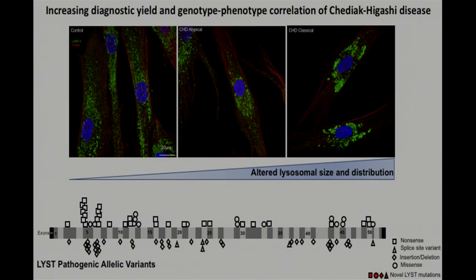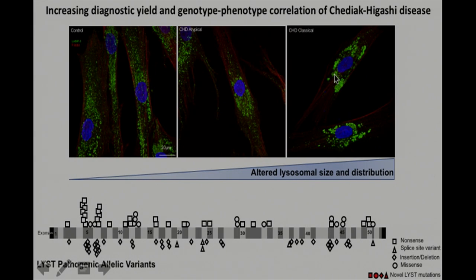Normal human fibroblasts show normal-sized lysosomes throughout the whole cell, whereas atypical and classical CHD will show enlarged lysosomes restricted to the area around the nucleus. This is more evident in the classical versus the atypical, which is more of an intermediate phenotype.